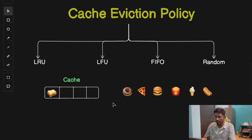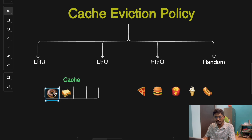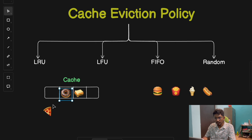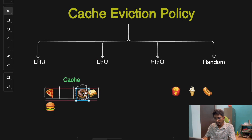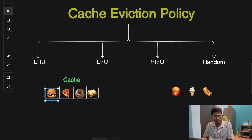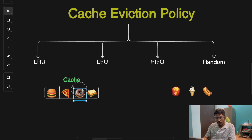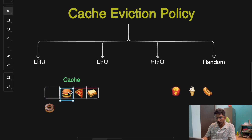Continuing the LRU example: when a user searches for donuts, donut moves to the most recent position and sandwich shifts down. Then someone searches for pizza — pizza goes to the most recent position. Then burgers — burger takes the most recent spot. If someone searches for donut again, donut is pulled from its current position and placed back at the most recent position, and the other items shift accordingly.